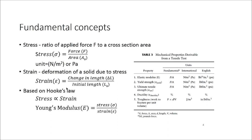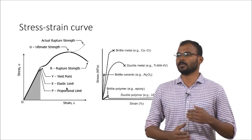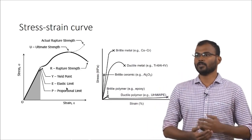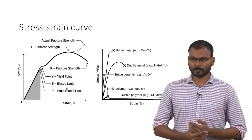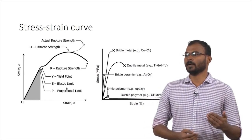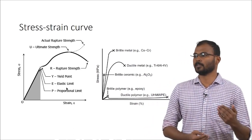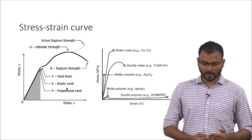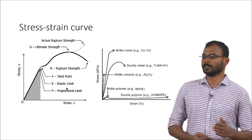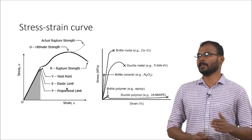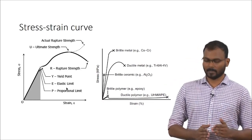Other properties related to tensile strength are elastic modulus, yield strength, ultimate tensile strength, ductility, and toughness. These properties will be explained using the stress-strain curve. If there is an increase in stress there would be an increase in strain. The initial proportionate linear increase — that linear region — is called the elastic region.